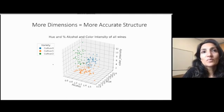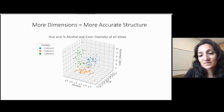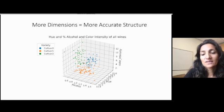If you have more features that you're visualizing or dealing with, you can start to get greater separation. So here we've added a third feature, color intensity. Now cultivar 2 is really starting to separate from the other two. It has a more intense color. And so more features and more dimensions gives you more accurate structure.